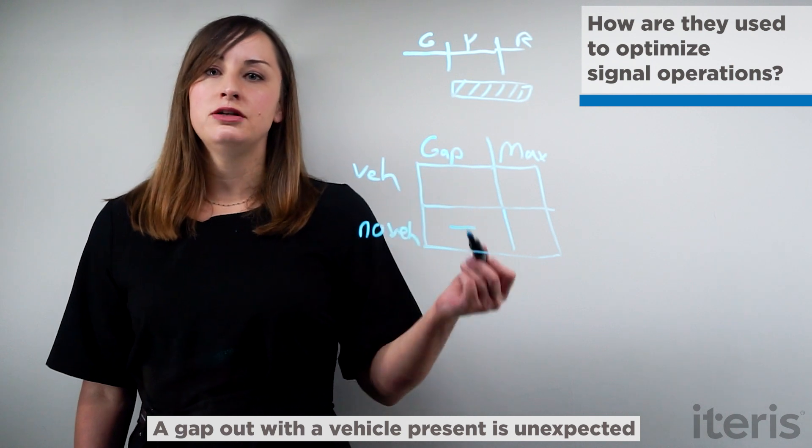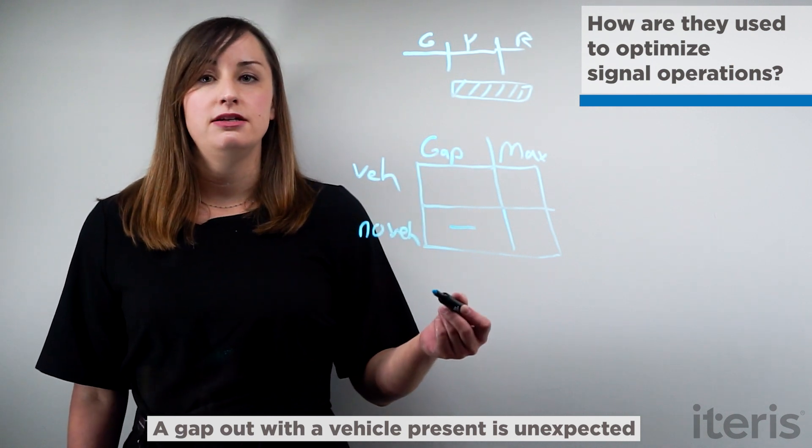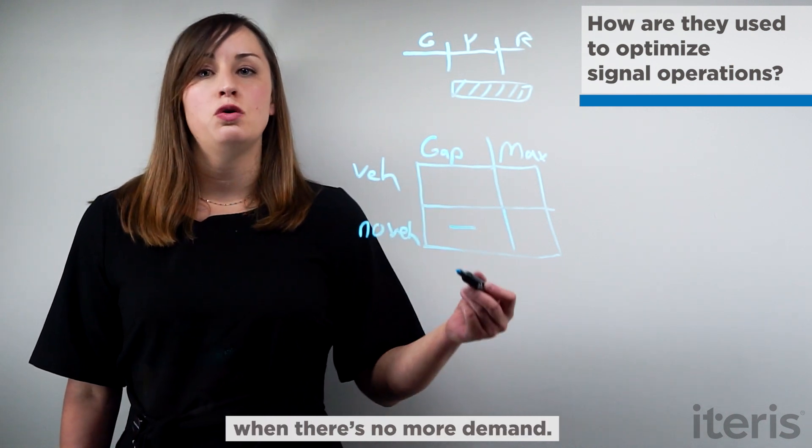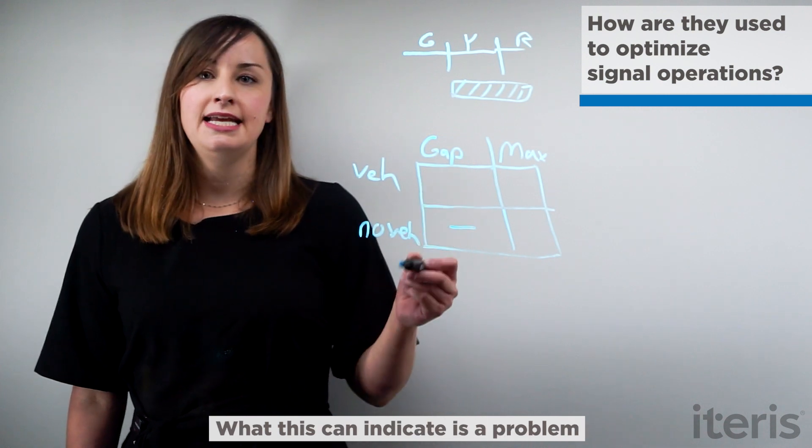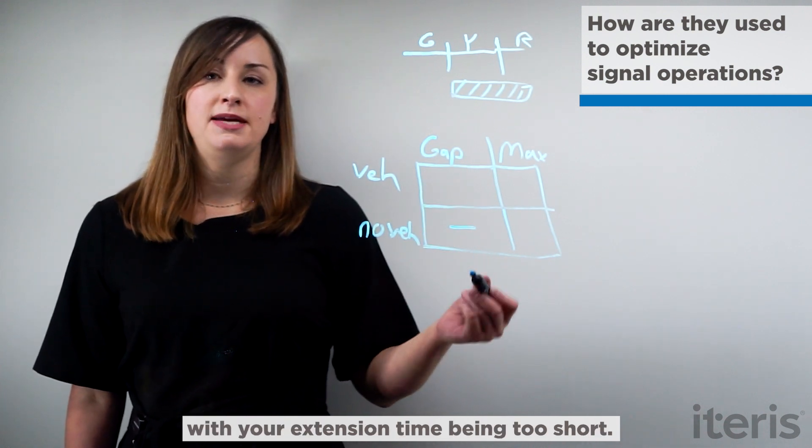A gap out with a vehicle present is unexpected. You would only see a gap out when there's no more demand. What this can indicate is a problem with your extension time being too short.